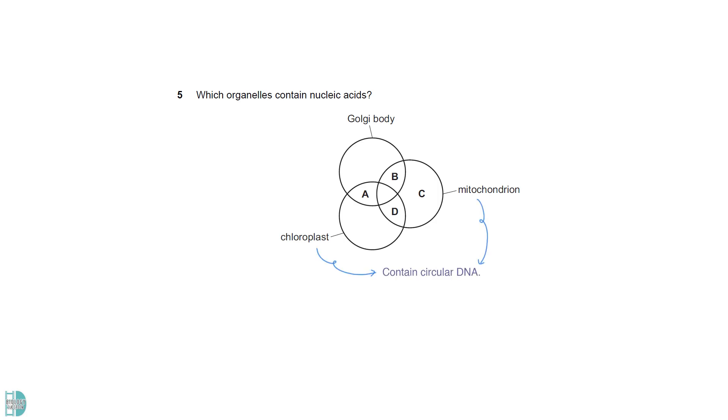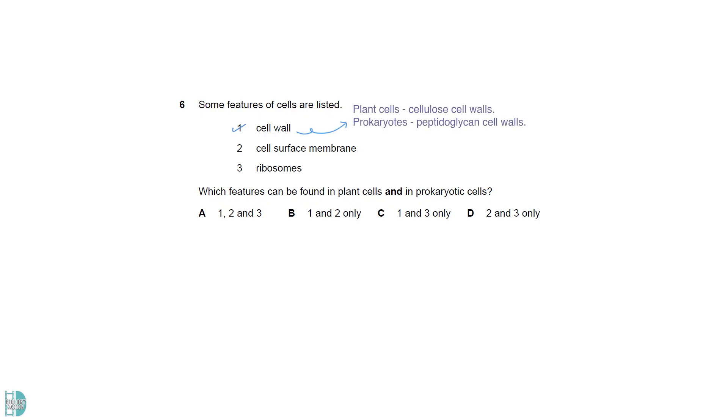Chloroplasts and mitochondria have circular DNA. The Golgi body does not contain any genetic material. Plant cells have cellulose cell walls, and prokaryotes have peptidoglycan cell walls. All cells have a cell surface membrane. Plant cells have 80S ribosomes and 70S ribosomes in their chloroplasts and mitochondria. Prokaryotes have 70S ribosomes. So all three are correct.